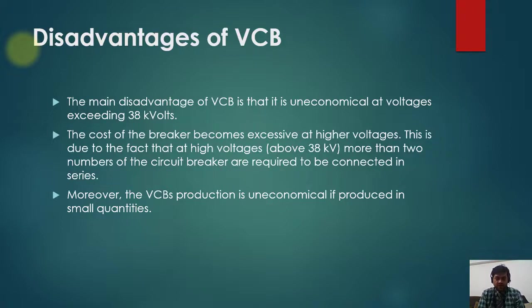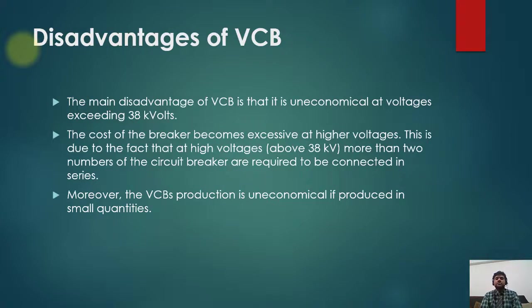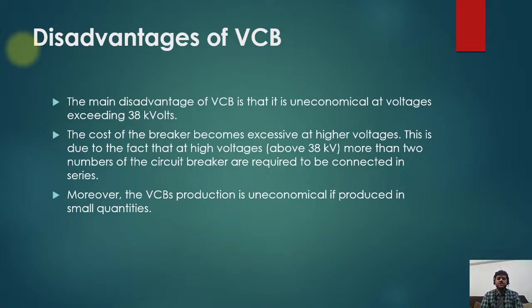This is due to the fact that at high voltages, more than two circuit breakers are required to be connected in series. So if you want to use a VCB at higher voltages, you have to increase the interrupter units. In the same circuit, you might have to put three, four, five, or six interrupter units in series as the voltage increases, making it very expensive. Moreover, VCB production is uneconomical when produced in small quantities — if produced in bulk, the cost would reduce.